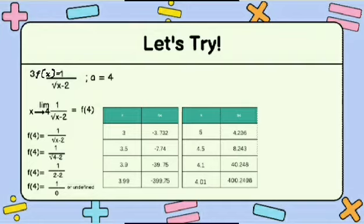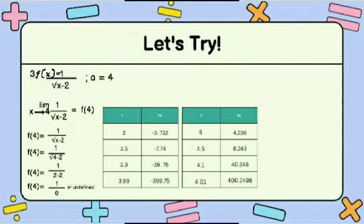First, we will check the values of X from the left. The limit of 1 over the square root of X minus 2 as X approaches 4 from the left is equal to negative infinity. Our X values are 3, 3.5, 3.9, and 3.99. Substituting into the equation, the f of X values are negative 3.7, negative 7.74, negative 39.75, and negative 399.75.